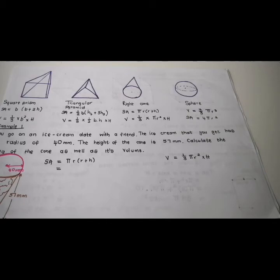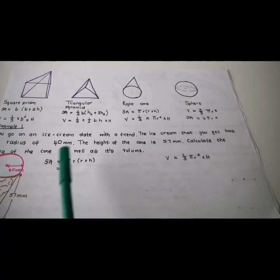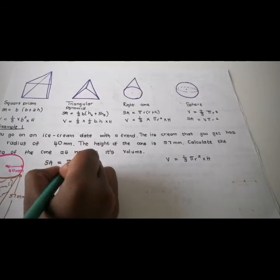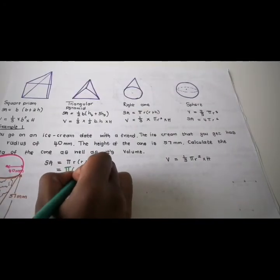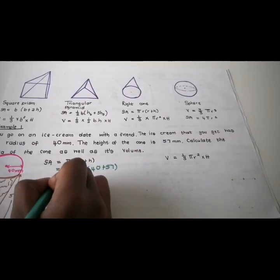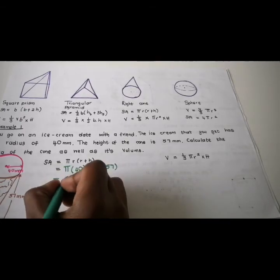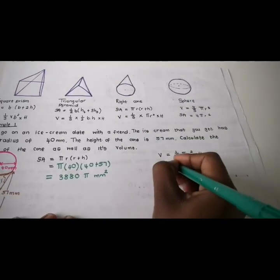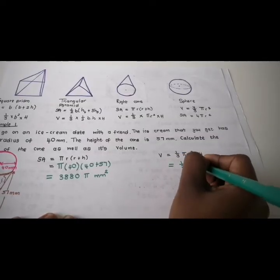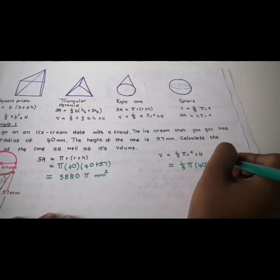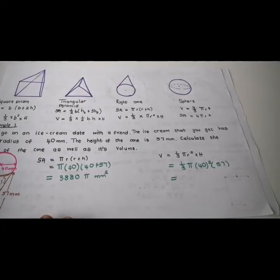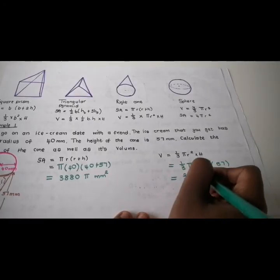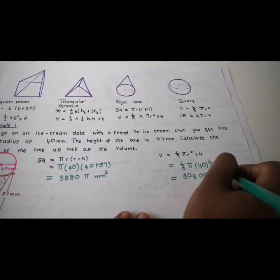Example: you go on an ice cream date. The ice cream cone has a radius of 40 millimeters and the height of the cone is 57 millimeters. Calculate the area and volume of the cone. Surface area: pi times 40 times (40 plus 57), giving 3880 pi millimeters squared. Volume: one third times pi times 40 squared times 57, giving 30400 pi millimeters cubed.